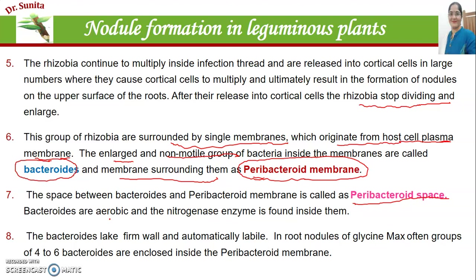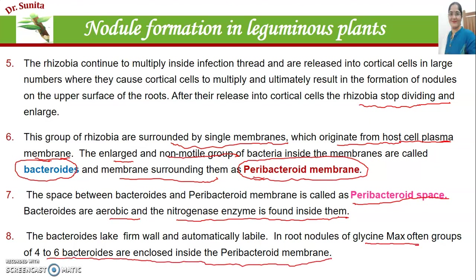These bacteroids are aerobic and contain the nitrogenase enzyme, which fixes molecular nitrogen into the usable form of nitrogen. In the root nodules of Glycine max, often four to six bacteroids are present inside the peribacteroid membrane. In most cases, one peribacteroid membrane is present, but in some cases there are four to six bacteroids within a single peribacteroid membrane.